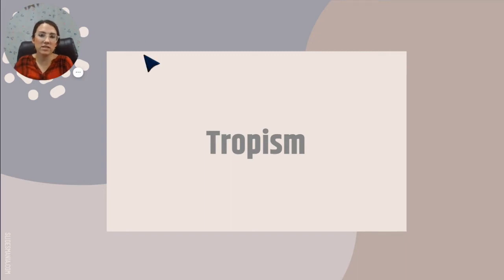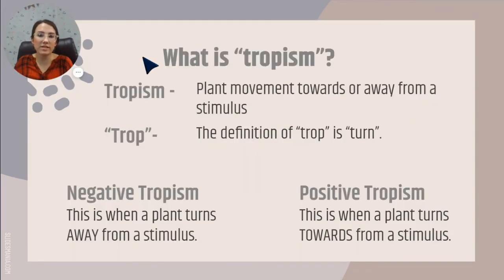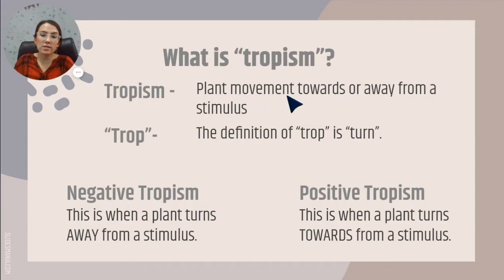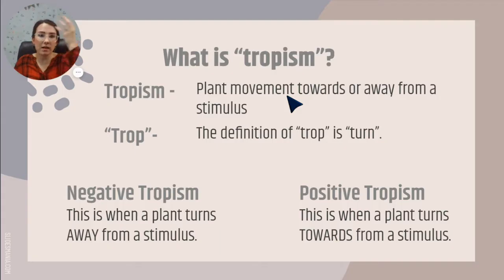Hey guys, welcome back. Today we're going to be going over tropism. So let's start out with the definition first of what is tropism. Tropism itself is plant movement towards or away from a stimulus. Remember, a stimulus is something that affects you. We learned about external stimuli outside our body and internal stimuli from inside our body.